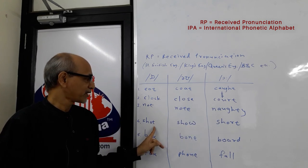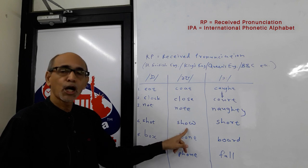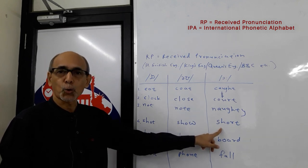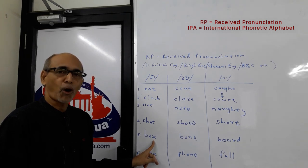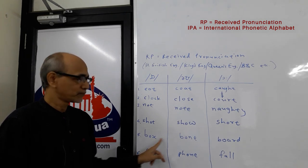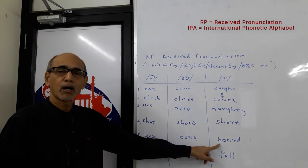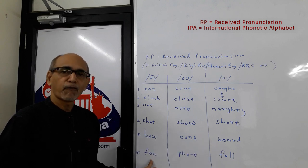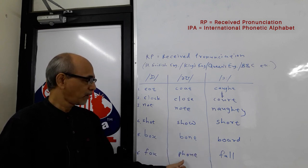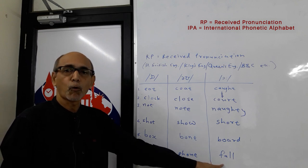The next set of practice words: SHOT, SHOW, SHORT, BOX, BONE, BOARD, FOX, PHONE, FALL.